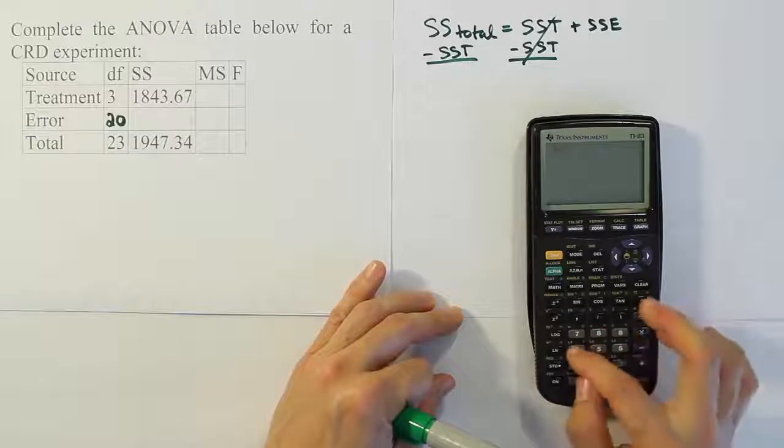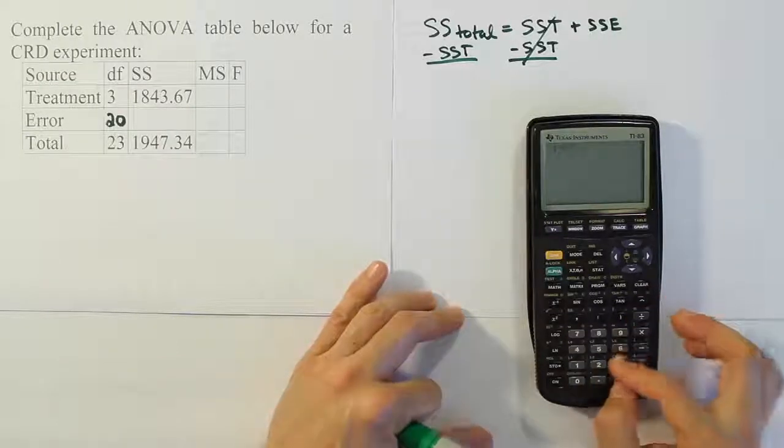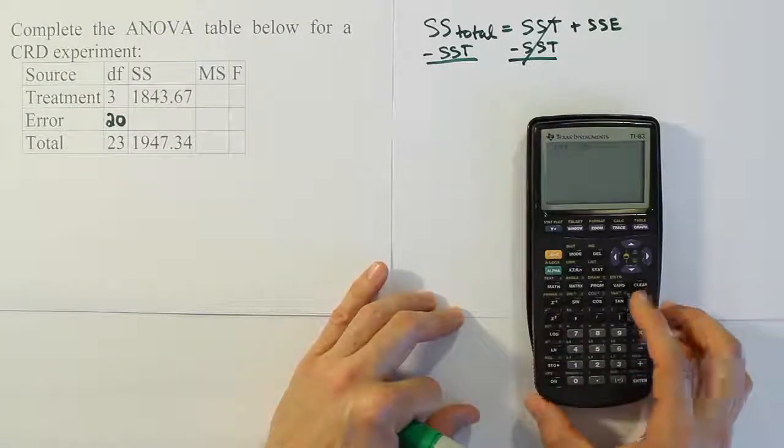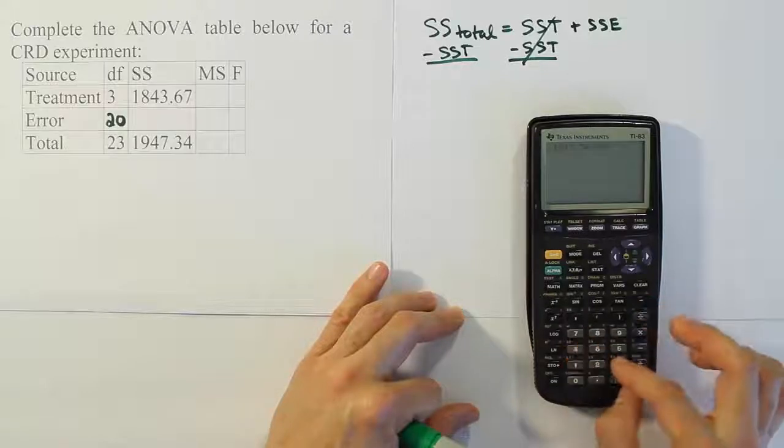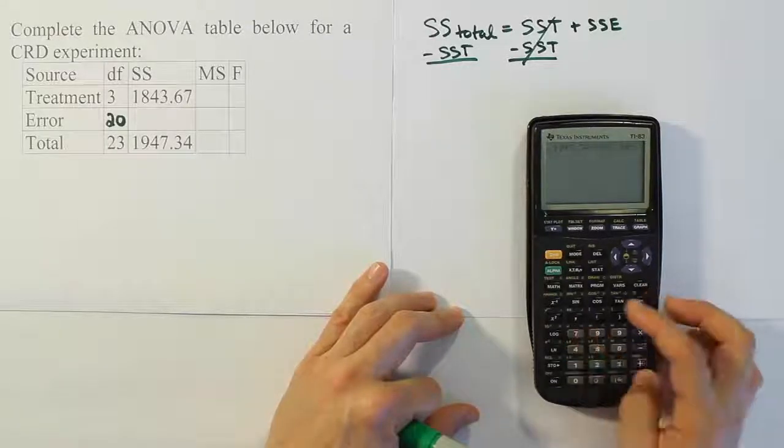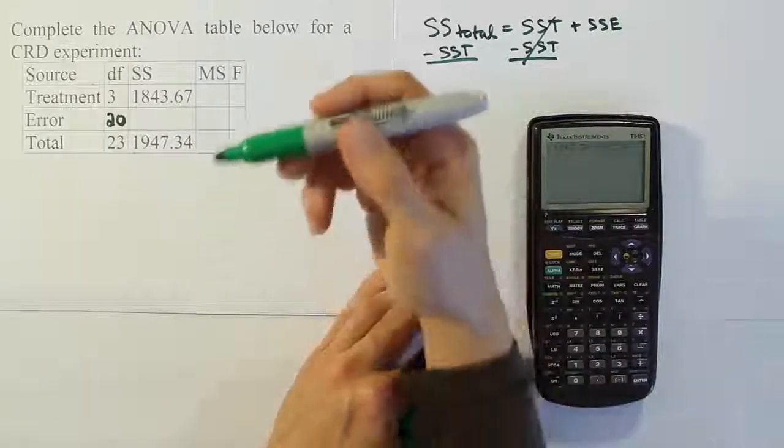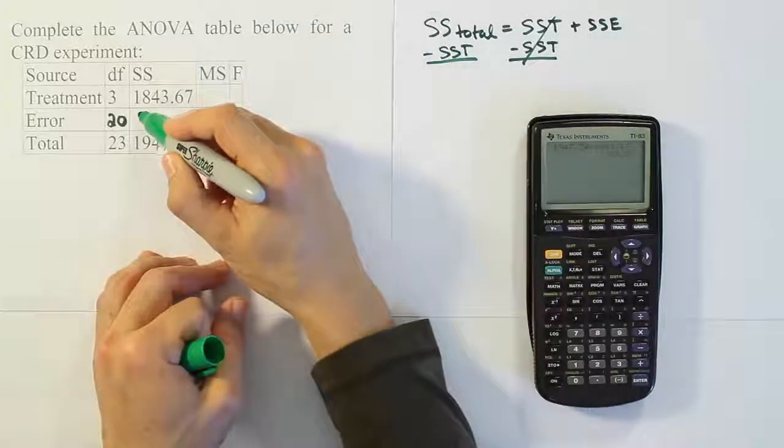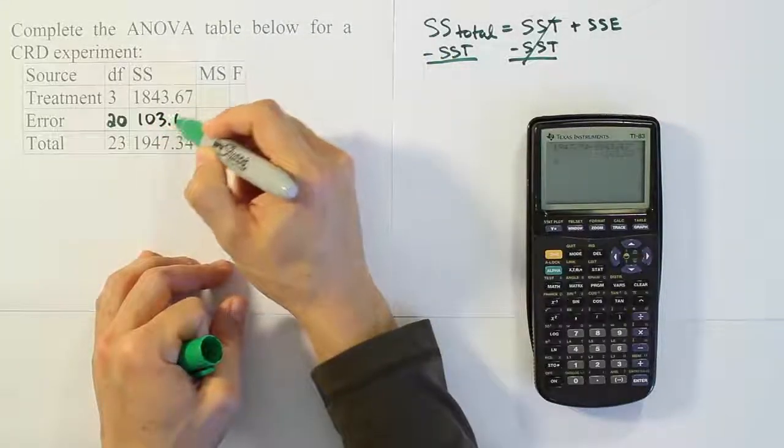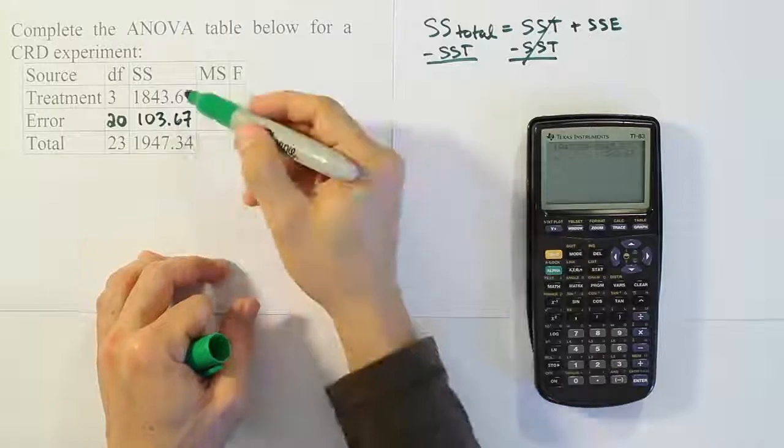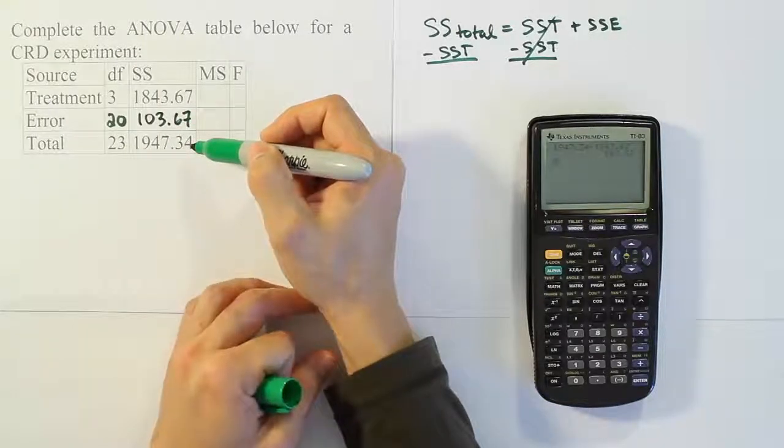So we have 1947.34 minus 1843.67. And when we do that, we get the answer 103.67. So 103.67. You should be able to check that these add up to 1947 when you're done.